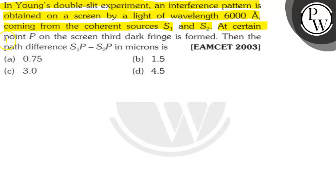At certain point P on the screen third dark fringe is formed. Then the path difference S1P minus S2P in microns is what? Let's find out.